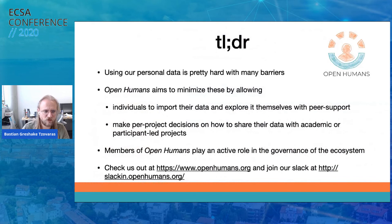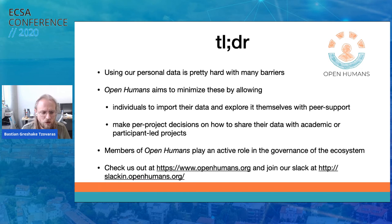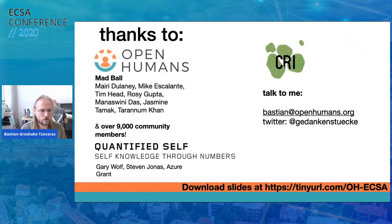So just to wrap it up: using personal data in citizen science is pretty hard, and even with Open Humans, there are still many barriers which are not easy to overcome. We aim to minimize these by having people use their own data with the support of peers, making per-project decisions on how data can be used in a variety of projects, be it academic or participant-led. To make this all work, besides being GDPR-compliant, it's very important that participants play an active role in governing the ecosystem. You can check us out on the website — our Slack is open to join for everyone. Thanks.